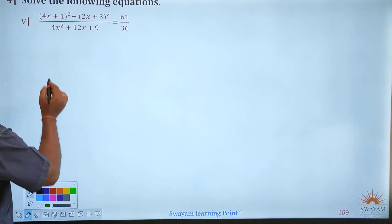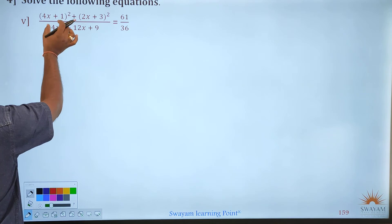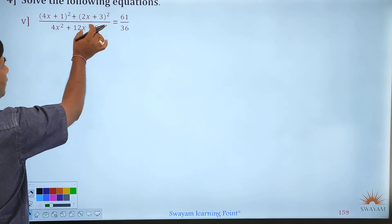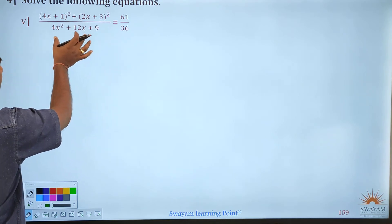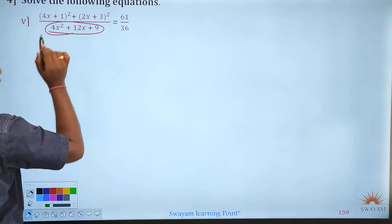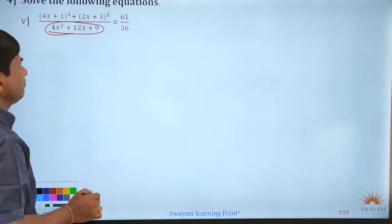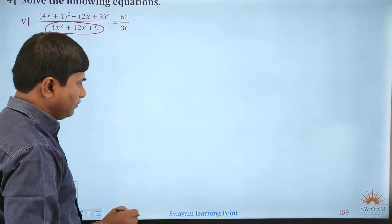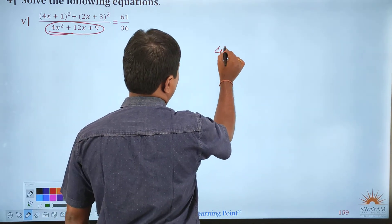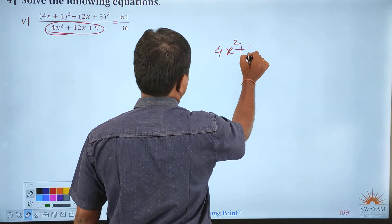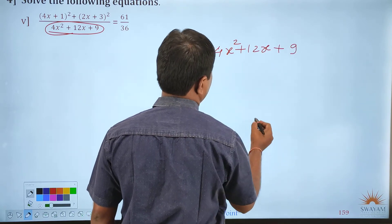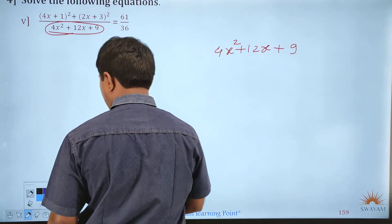Here we look at the expression: (4x+1)² plus (2x+3)², and we are going to understand the equation. When we have 4x² plus 12x plus 9, let's see if we can factor it.